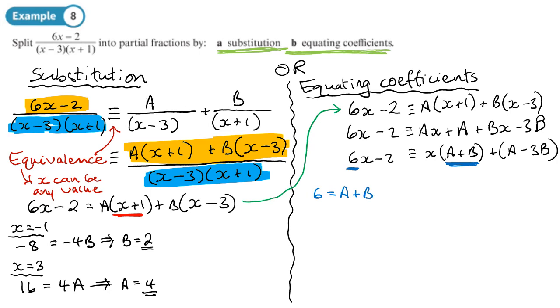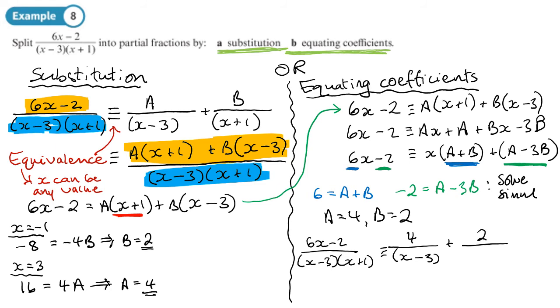So I can write down 6 equals a plus b. And let's have a look at the number terms. Well, I've got minus 2 here and on the other side, a minus 3b. So I can write a second equation, which is negative 2 equals a minus 3b. They have the balance. Now, we can solve those simultaneously, which I'm sure you can do very easily, and we'll end up with the same values of a equaling 4 and b equaling 2. So up here, we will just solve simultaneously. So when we do a question like this, we could just write down the values of a and b, or we can finish it off nicely by writing something like this. 6x minus 2 over x minus 3 times x plus 1 is equivalent to 4 over x minus 3 plus 2 over x plus 1. Yeah? And then that one is done.